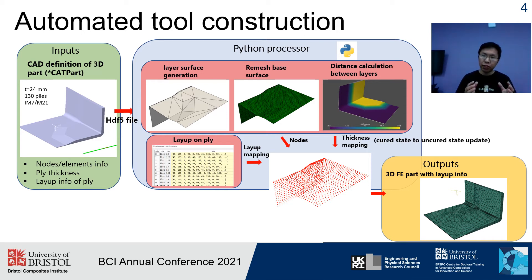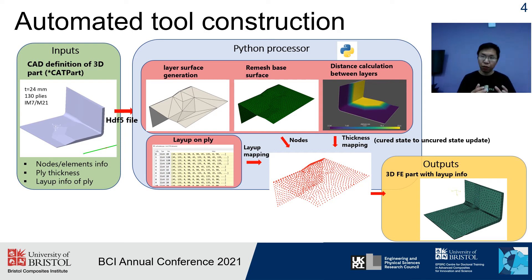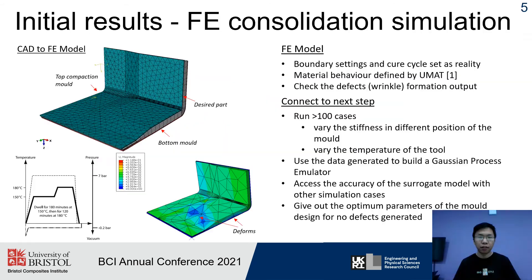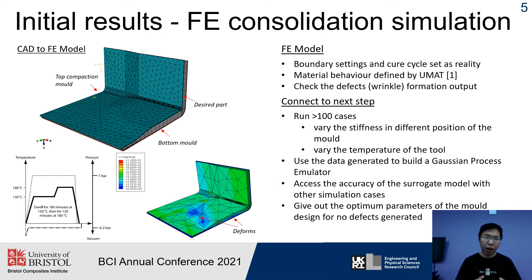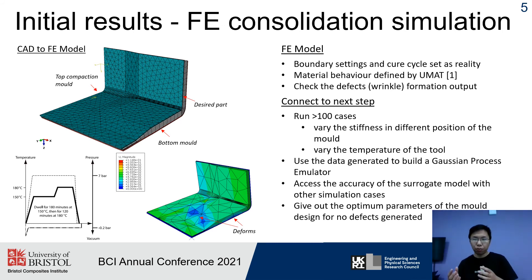One thing to mention here is that since the desired part corresponds to the cured state, there is a need to update the geometry information to the pre-consolidation state. The processor provides a feasible way to do this by updating the thickness of each ply. The top left shows the output of the first stage — the automated tool. A full consolidation model was constructed as output, consisting of three different parts: the top compaction mould, the bottom mould, and the middle desired part. The boundary settings and cure cycle are set to match reality, and defect generation is used as the final output for simulation.